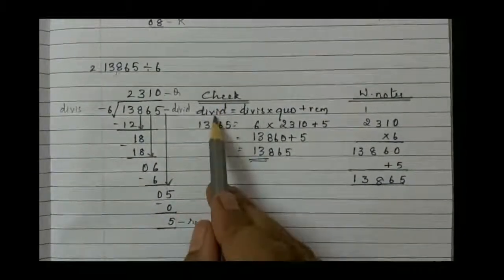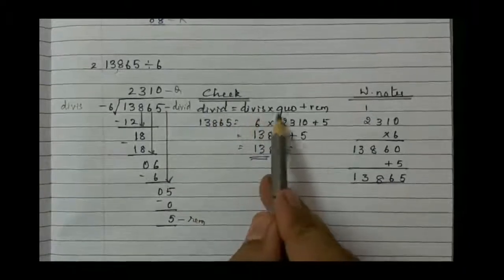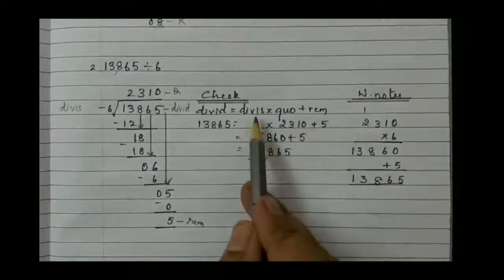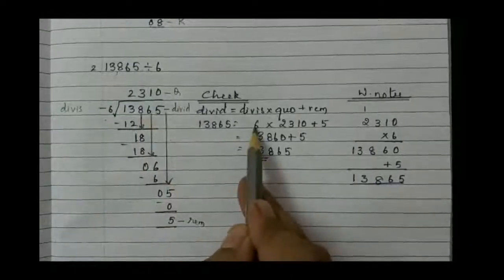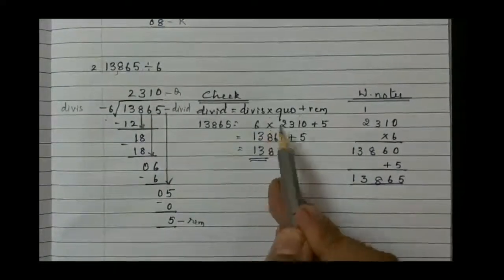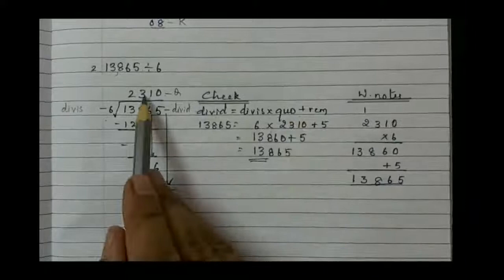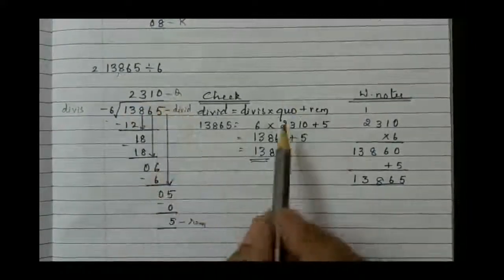Write down the formula: Dividend is equal to divisor into quotient plus remainder. So divisor is 6. Write it below divisor, multiply. Then quotient, the answer which we got, that is 2310.